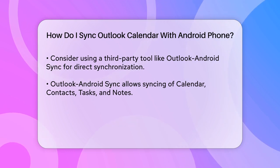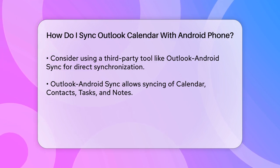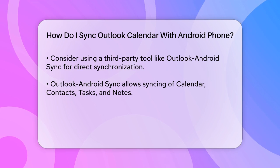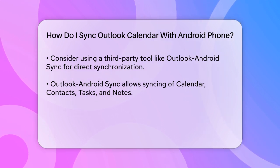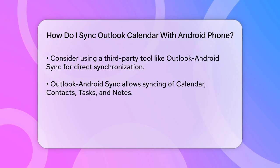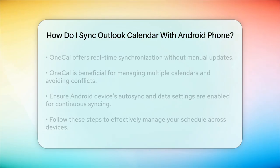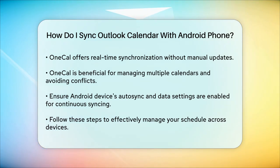This method gives you full control over your data and ensures secure, multi-directional synchronization. If you prefer a more integrated solution, you can also use OneCal, which syncs your Outlook calendar with your Android device in real time. With OneCal, you don't need to manually sync your calendars — it happens automatically. This tool is particularly useful if you have multiple calendars, such as work and personal ones, as it helps avoid scheduling conflicts and ensures all your events are in one place.